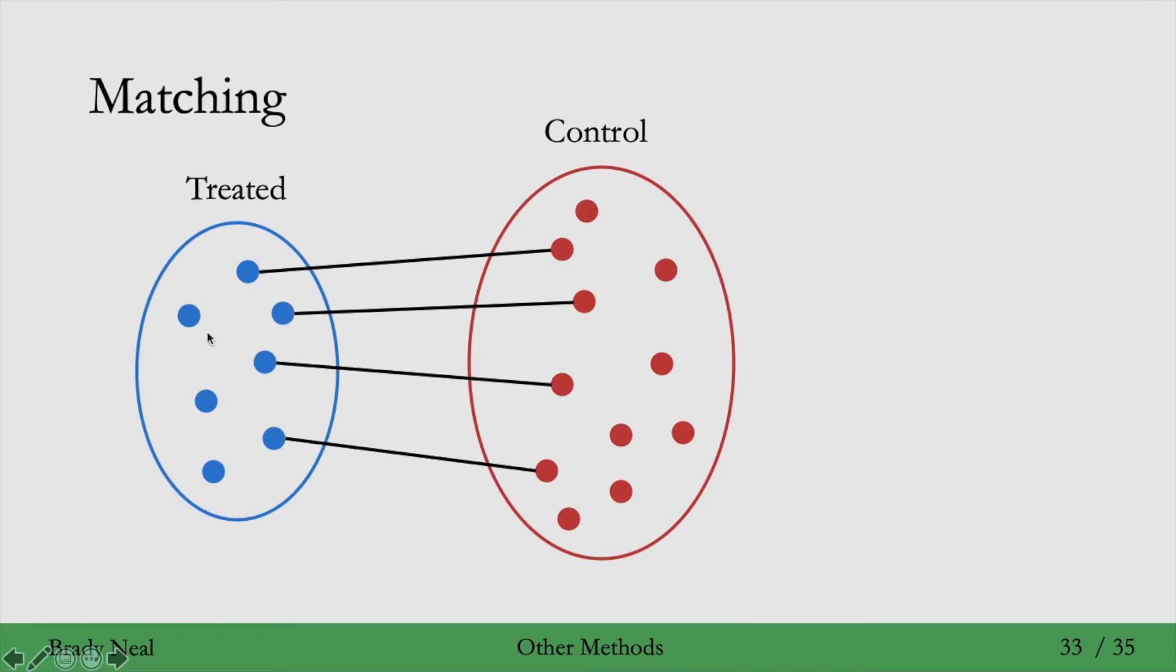And then these three treated individuals don't get matched to anyone. So the ones that are not matched, same in the control group, there's many more individuals who are not matched in the control group. The individuals that are not matched are just thrown out of the analysis, and then we only consider the ones that are matched. This is because we need to find a close enough match in order to say that we've adjusted properly. So if we can't find a close match, then we just got to throw it out.